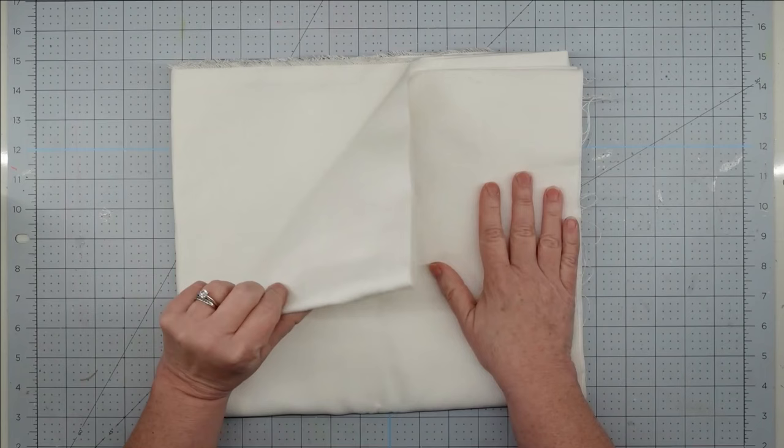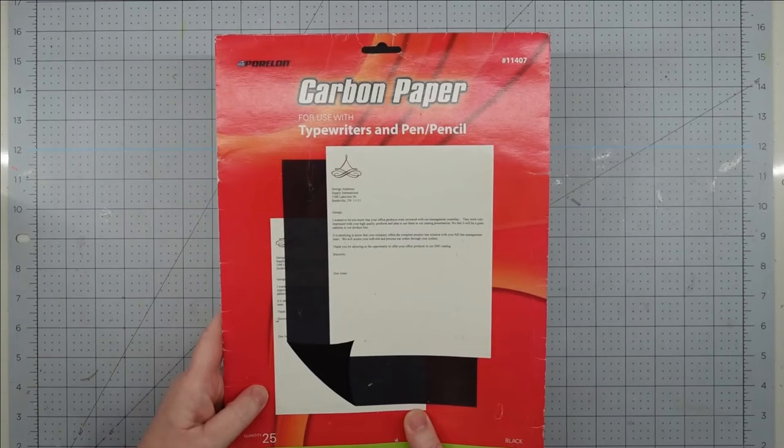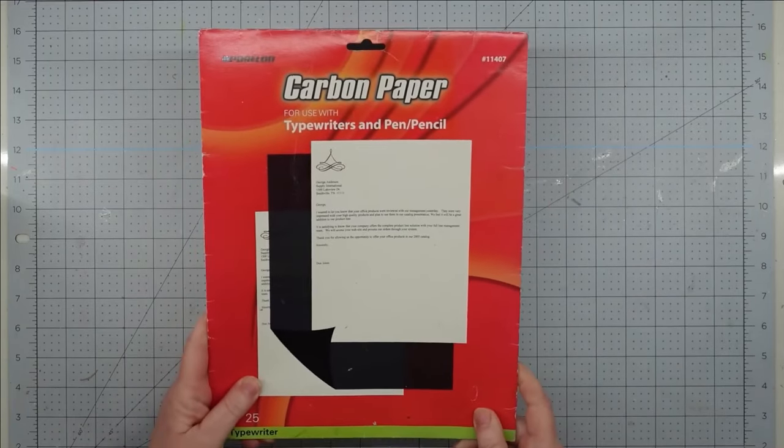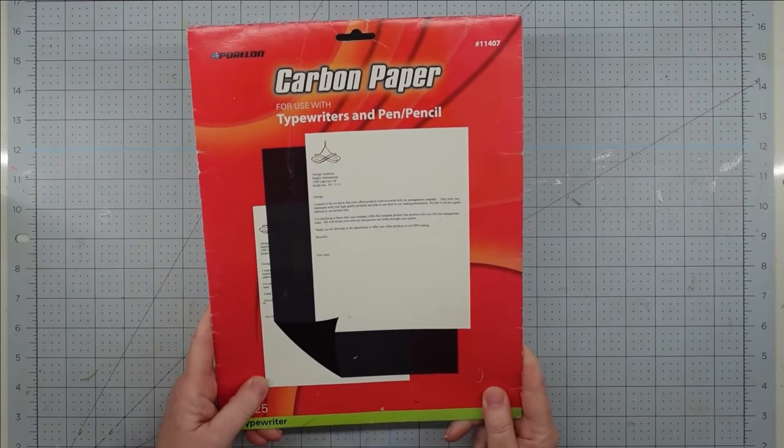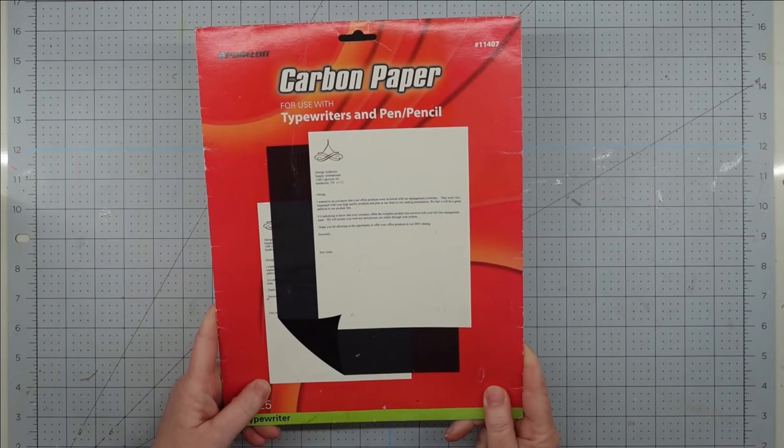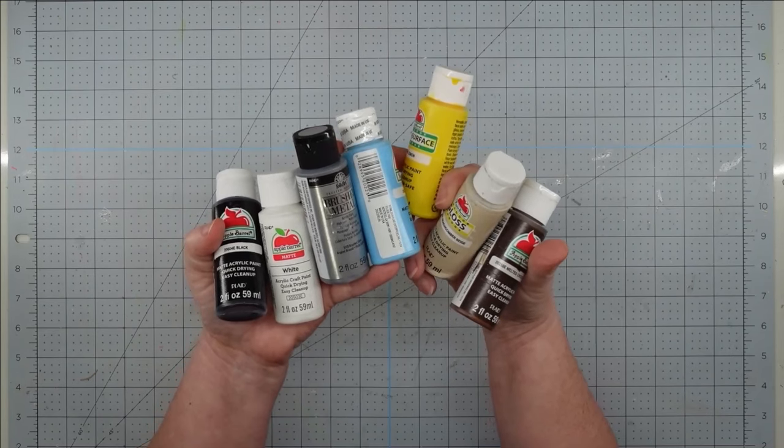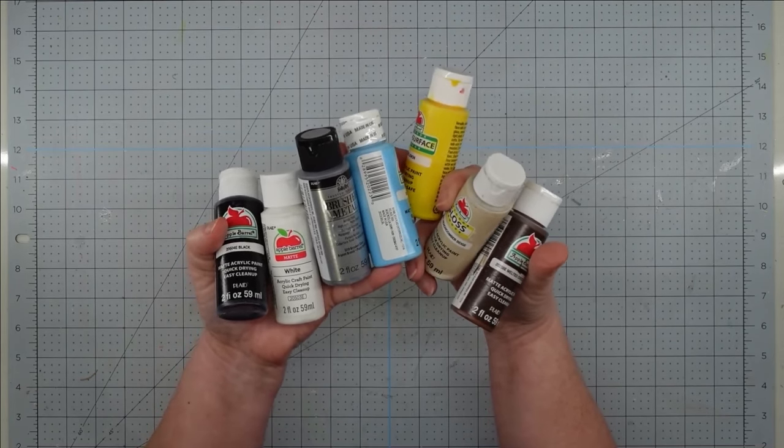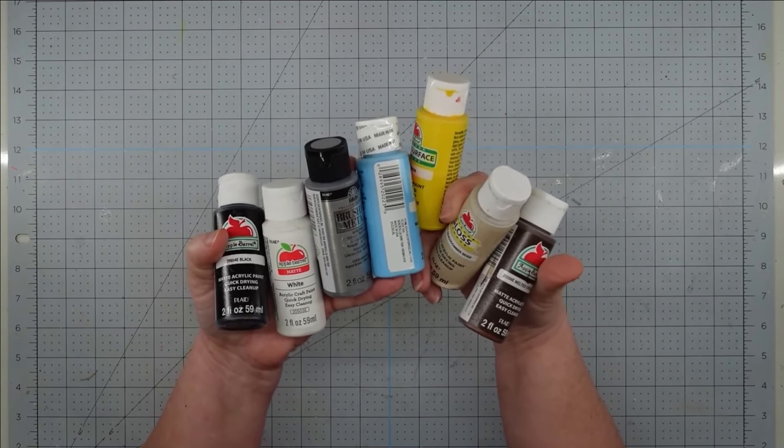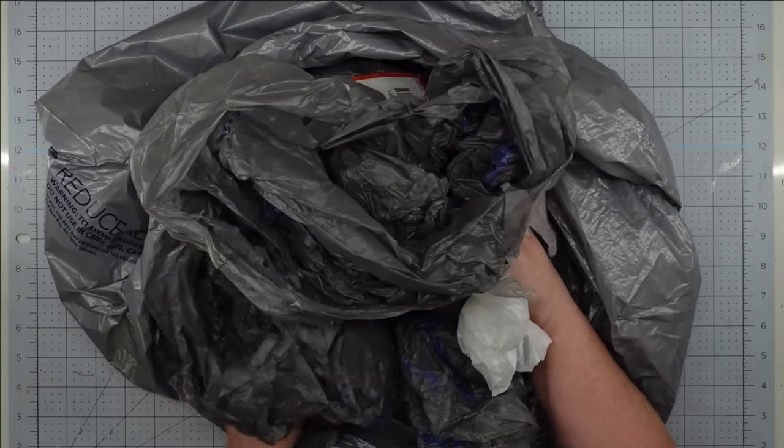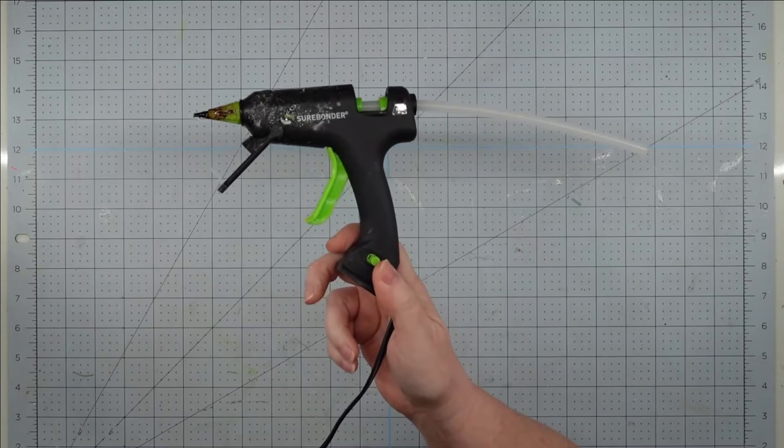Some white duck cloth. You could also use canvas or an old drop cloth. Some carbon paper. I got mine several years ago at Office Depot, but you can also get it on Amazon or you can use the pencil trace method. Some acrylic paint in various colors. Some leftover garbage bags to use for stuffing, some twine, and my glue gun and some glue sticks.